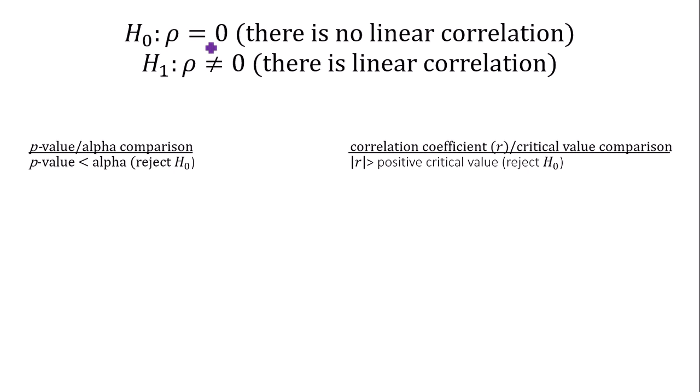Anytime you conduct this hypothesis test for correlation, your null is always ρ equals 0, there is no linear correlation, or ρ is not equal to 0 is the alternative hypothesis, meaning there is linear correlation. You can use your p-value alpha method. If the p-value is less than alpha, we reject H0. Or you could compare the correlation coefficient to the critical value. Let's first do the p-value alpha method.